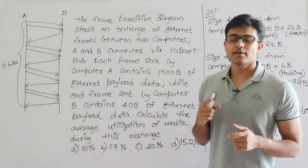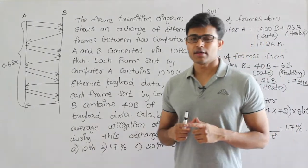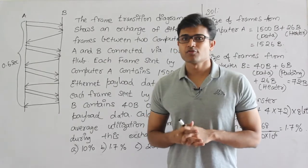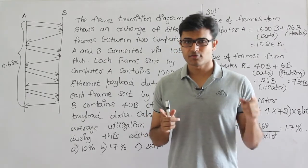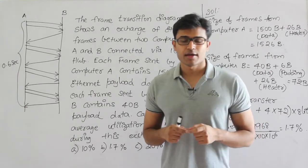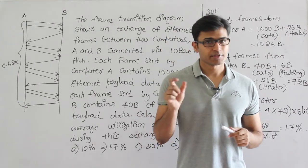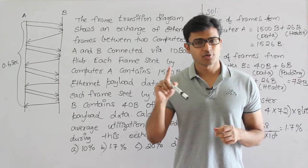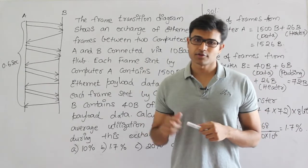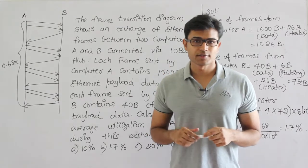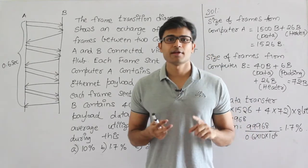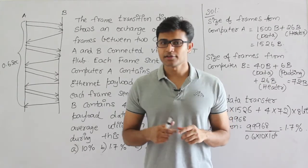In standard Ethernet, the maximum size of a frame is 1526 bytes — 1500 bytes of data plus 26 bytes of header. The minimum size of a frame is 46 bytes of data plus 26 bytes of header, which is 72 bytes. Remember these maximum and minimum frame sizes in standard Ethernet.